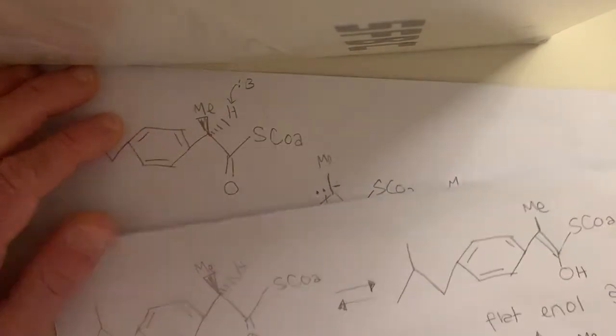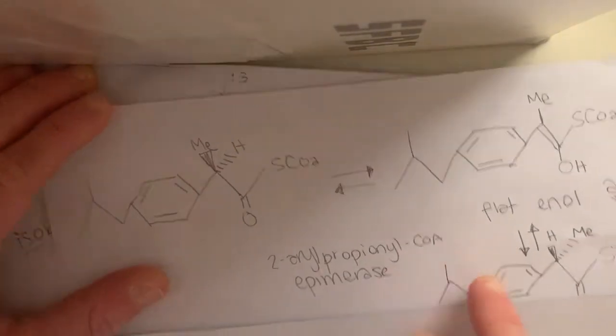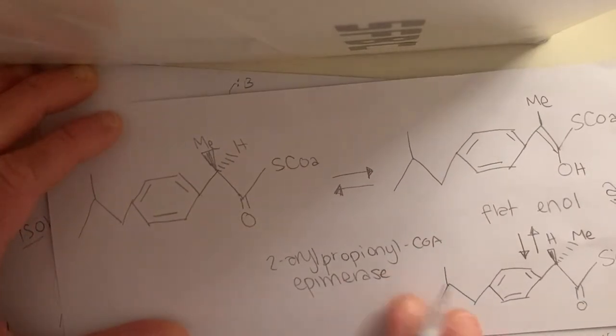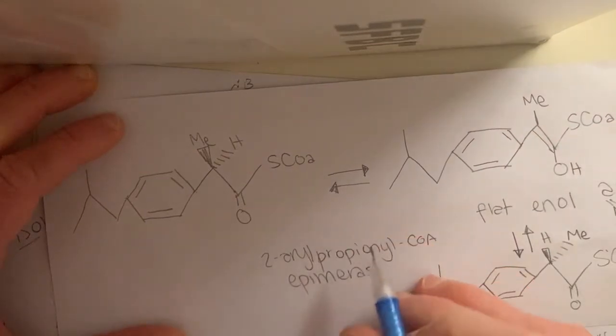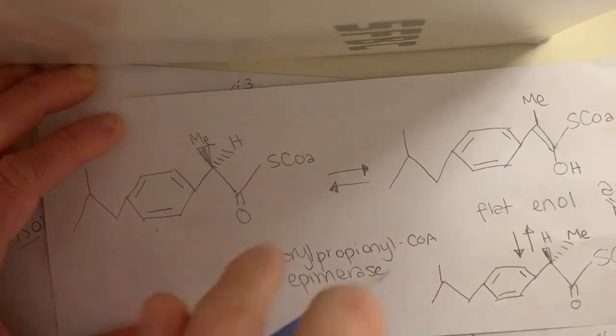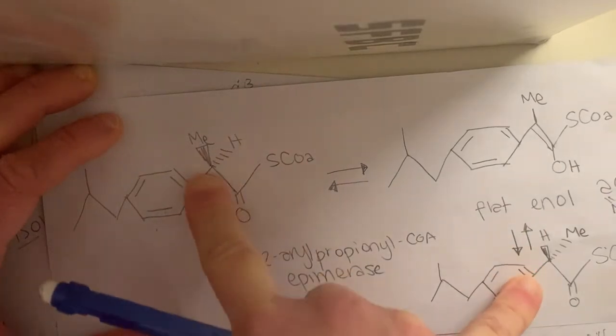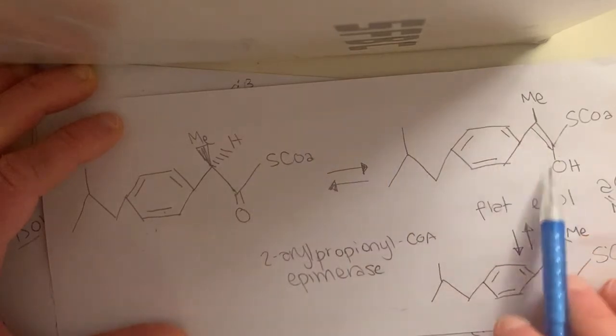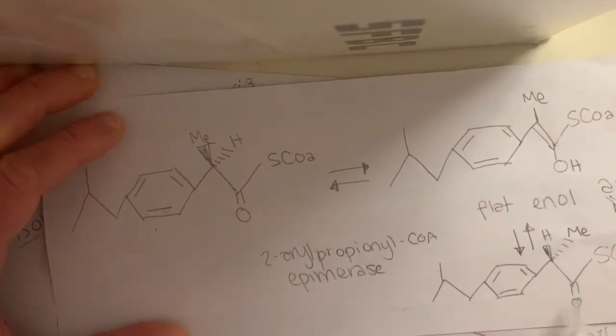And so now you go from this. So you've done with the help of this 2-aeropropionyl-CoA epimerase. So epimerase is when something that is switching the orientation of a single chiral center. So you're going from this to this. And so it's doing this by promoting going through this flat intermediate. And now you get this.